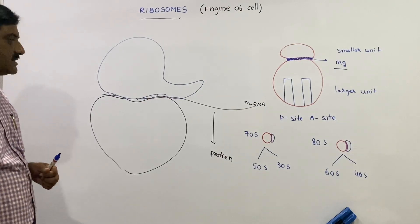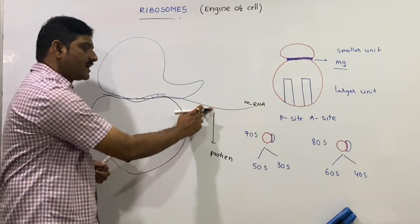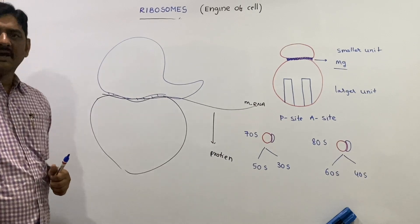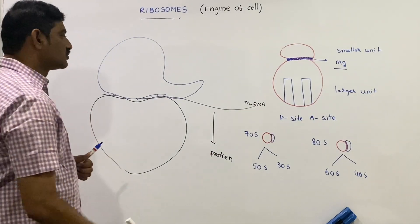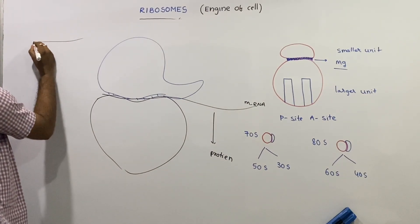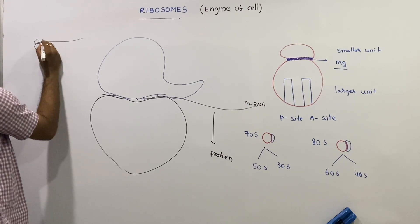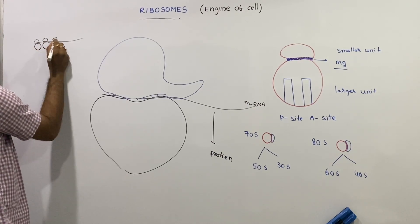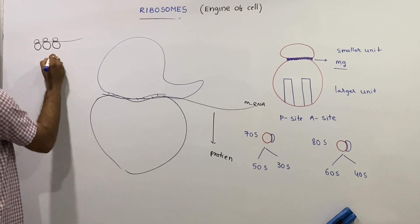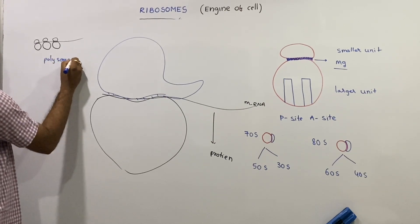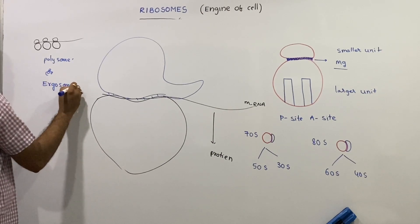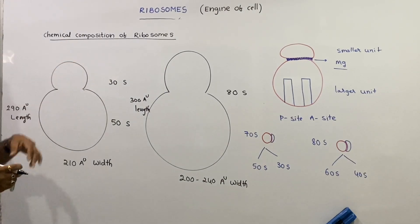The function of ribosomes is to translate the genetic message of mRNA into protein — mRNA delivers the information for protein synthesis. During protein synthesis, several ribosomes appear in a chain-like arrangement. These chain-like ribosomes are called polysomes, polyribosomes, or ergosomes.